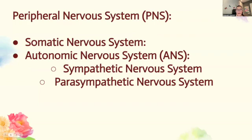Now, the somatic nervous system. This is the system that controls voluntary movements and transmits sensory information to the CNS. It includes sensory neurons that convey information from sensory receptors to the CNS, and motor neurons that carry commands from the CNS to your skeletal muscles.